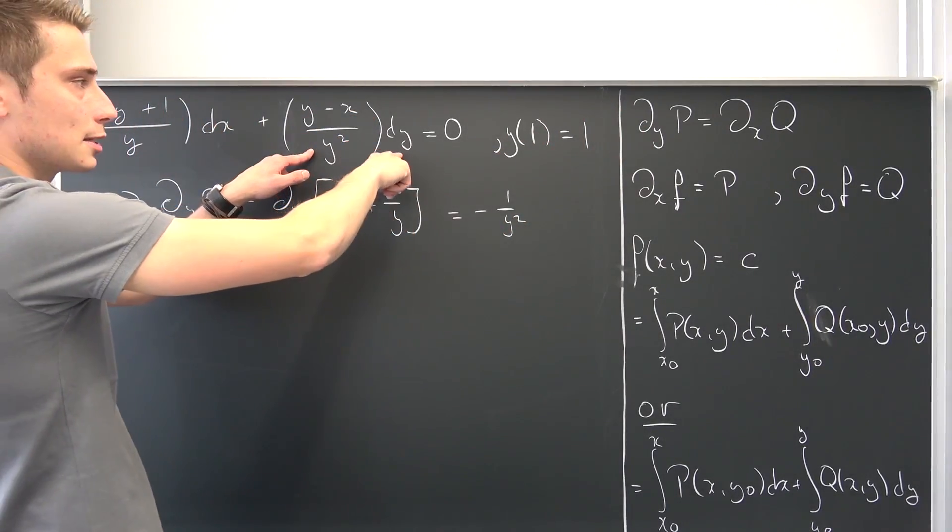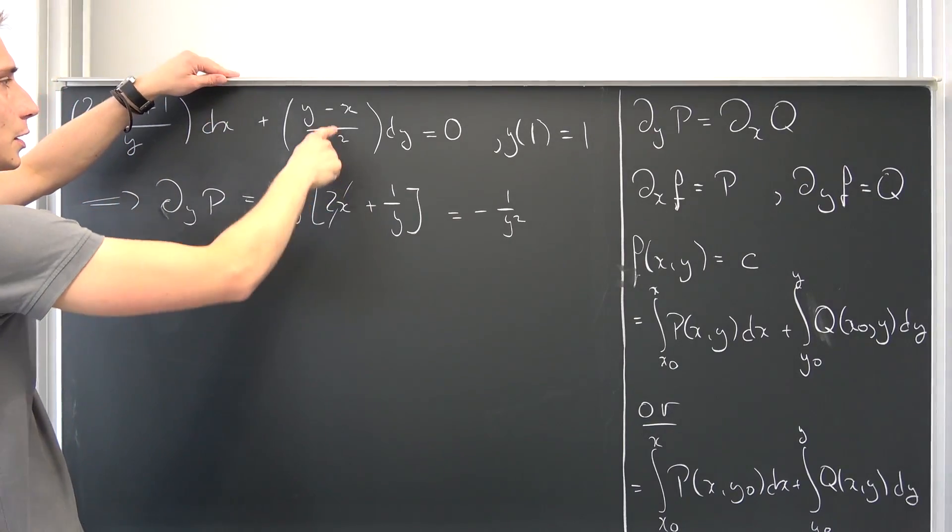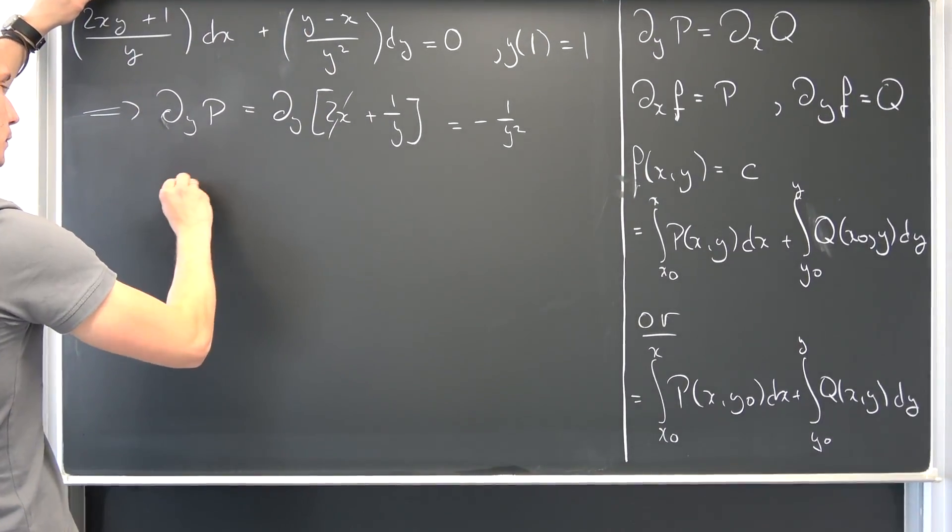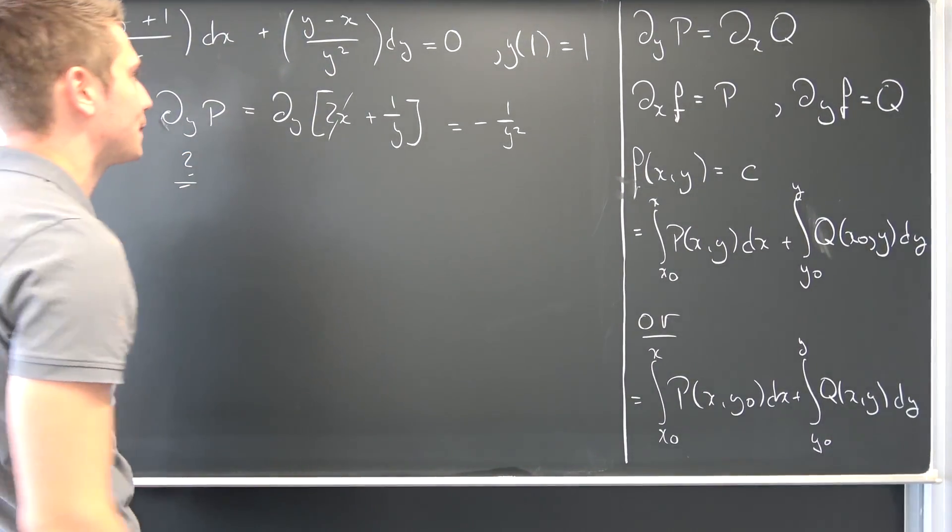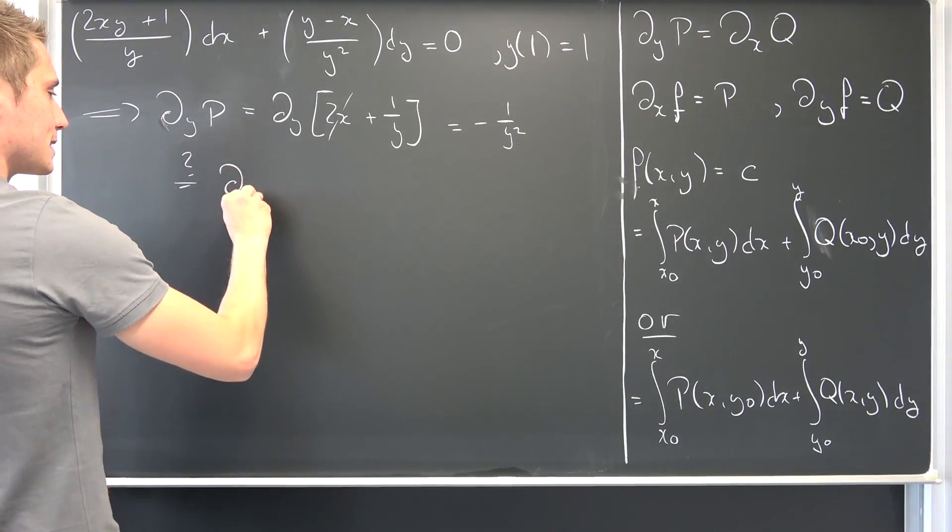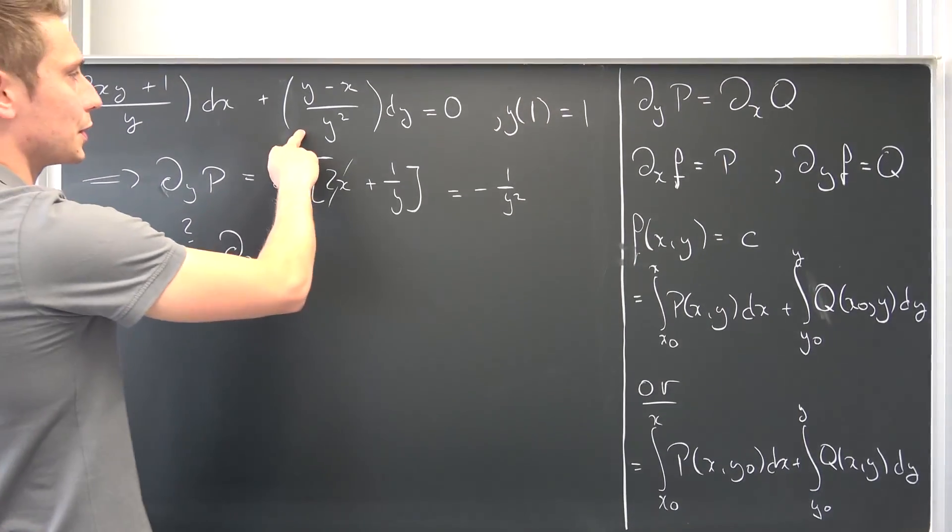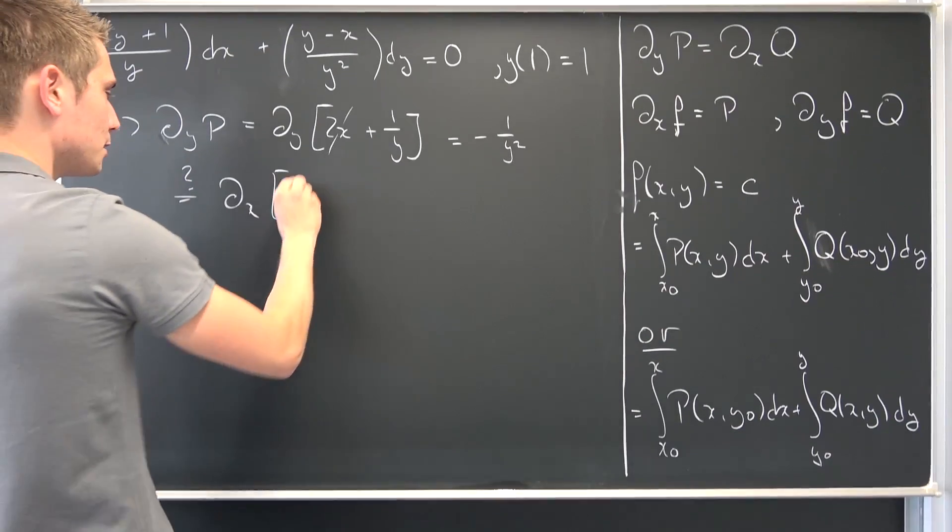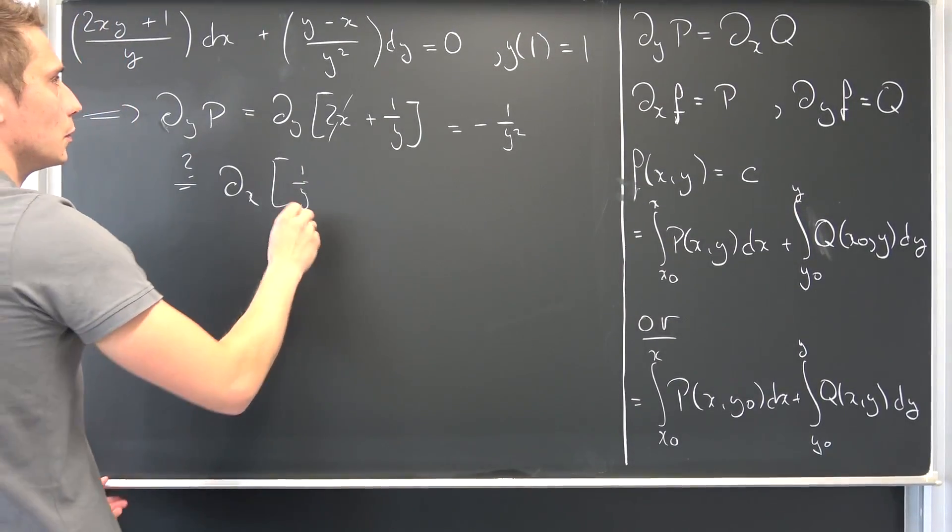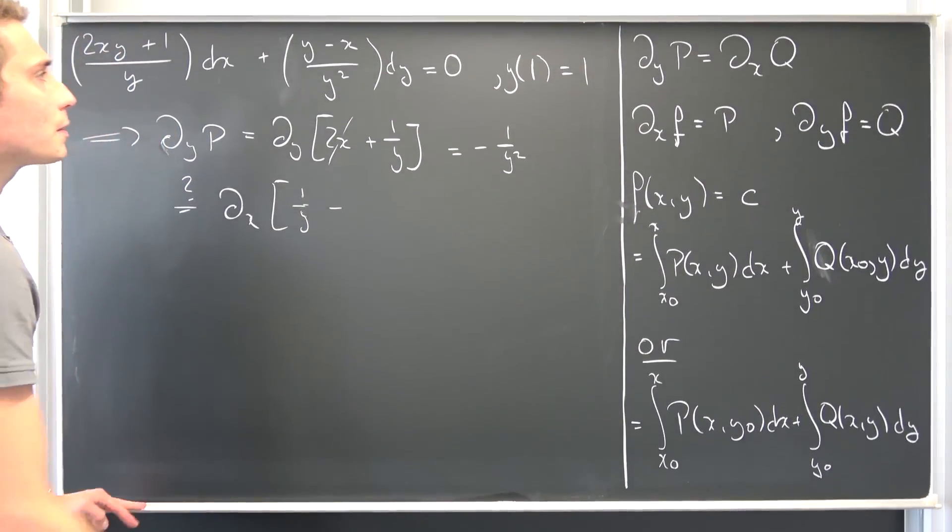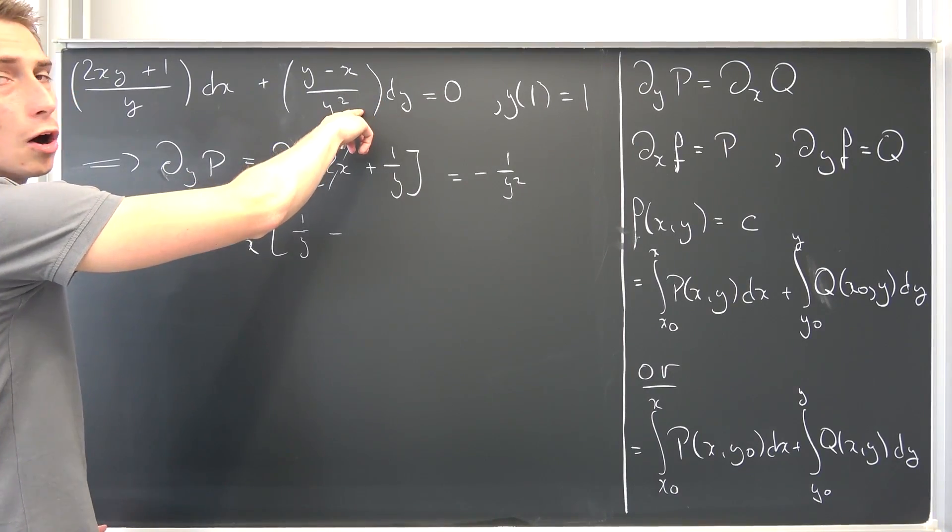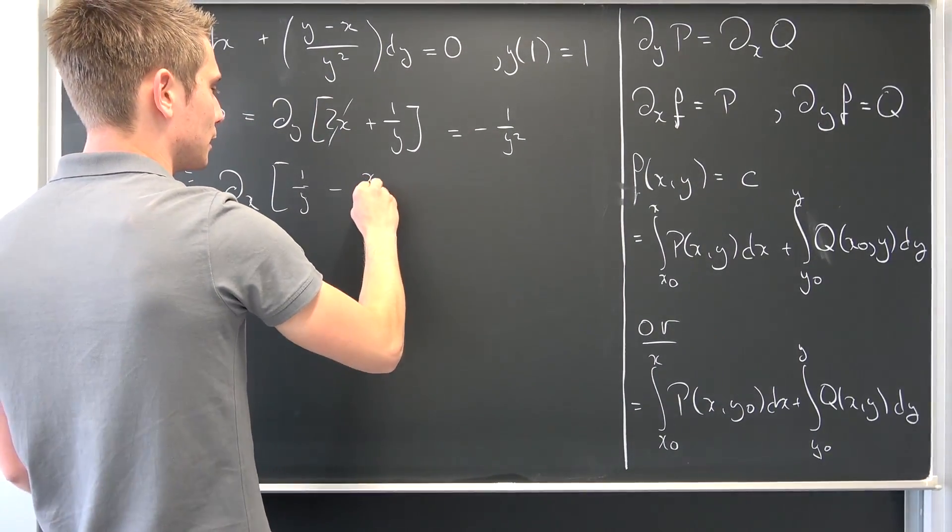Q once again is the coefficient of our differential in dy, meaning we are going to get—there's a little question mark up here—it's just the same as ∂x of, once again splitting it up, we are going to have 1/y, 1/y and then negative x over y squared.